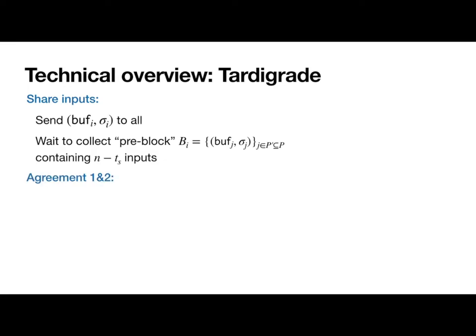Now in the two agreement stages, we have the same goal: to agree on a set of pre-blocks, but each stage has different security properties. I'll talk more about that in just a moment, but for now, let's fast forward. Eventually, the second agreement stage outputs a set of pre-blocks. At that point, each party combines all of the transactions into a final block and outputs it to their array.